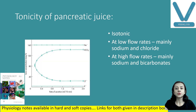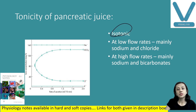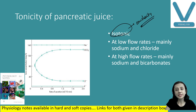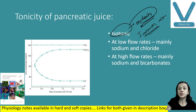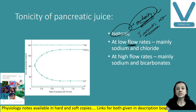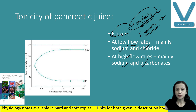The tonicity of pancreatic juice is isotonic — meaning osmolarity is the same as plasma. Isotonic means osmolarity is the same, while isoosmotic means the constituents are the same. Here, constituents are not the same, only osmolarity is the same. At low flow rate, sodium and chloride ions predominate; at high flow rate, sodium and bicarbonate ions are increased.